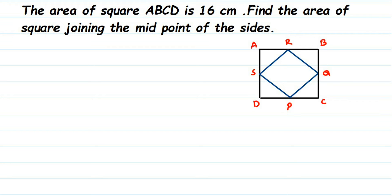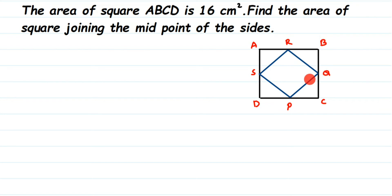Here is a question on squares. The question is: area of square ABCD is 16 centimeter square. Find the area of the square joining the midpoints of the sides. We have given the area of the big square ABCD — the one in black color — which is 16 centimeter square, and we have to find out the area of the inner square SRQP shown in blue color.